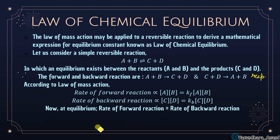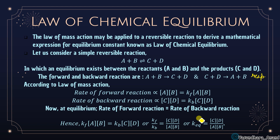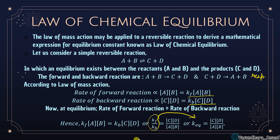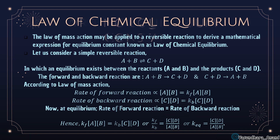At equilibrium, the rate of the forward reaction equals the rate of the backward reaction, so Kf·[A][B] = Kb·[C][D]. Rearranging, Kf/Kb = [C][D]/[A][B]. Since Kf and Kb are both constants, their ratio is another constant called Keq. So Keq = [C][D]/[A][B] = concentration of products / concentration of reactants.